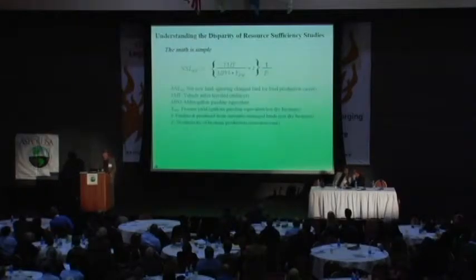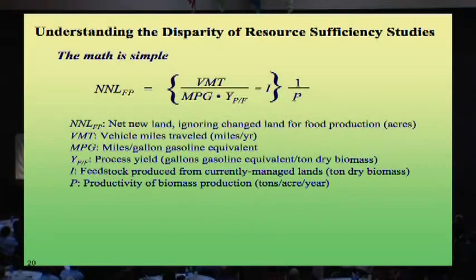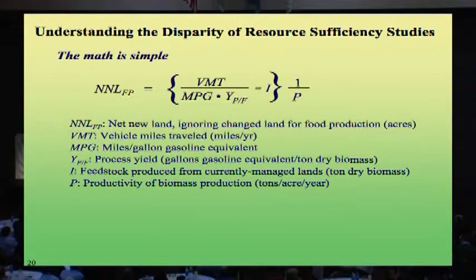Two questions come up here. One of them is, who's right? But the other is, how can people get such different ideas about something as basic as this? The interesting thing is, the math is not the problem. There are only five variables in this equation to calculate the net new land that's needed: vehicle miles traveled, miles per gallon, process yield, how much biomass you produce from other land uses (the I term), and the inverse biomass productivity. It's very simple as these things go.